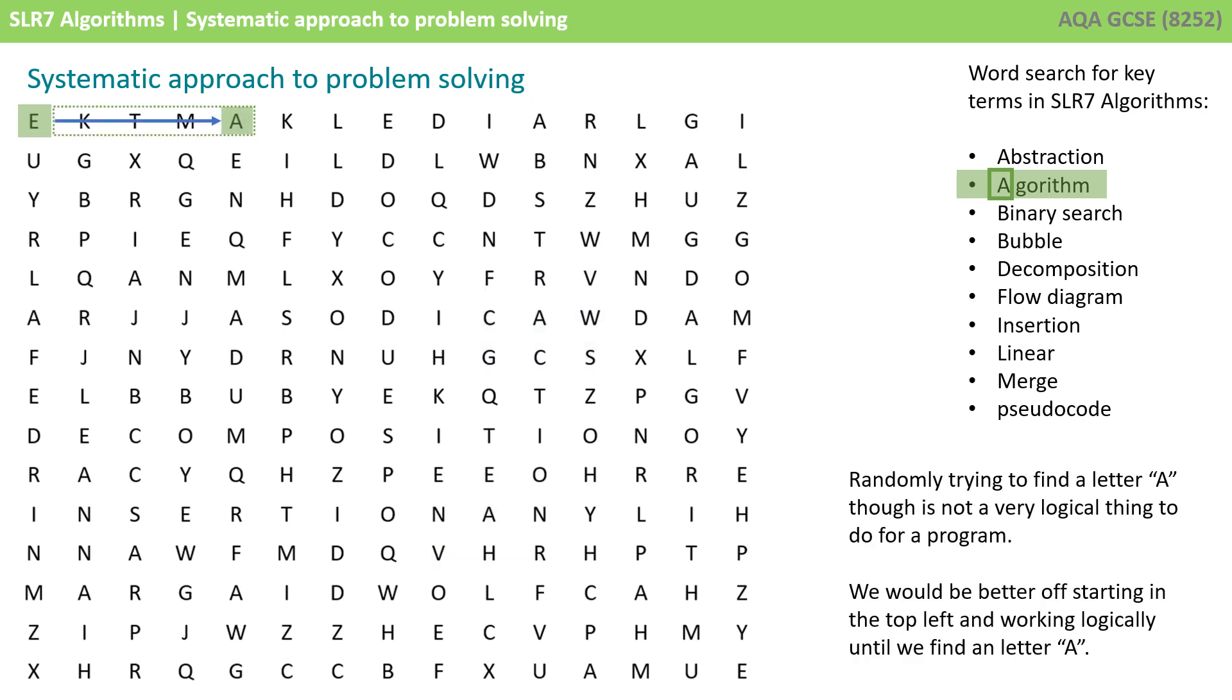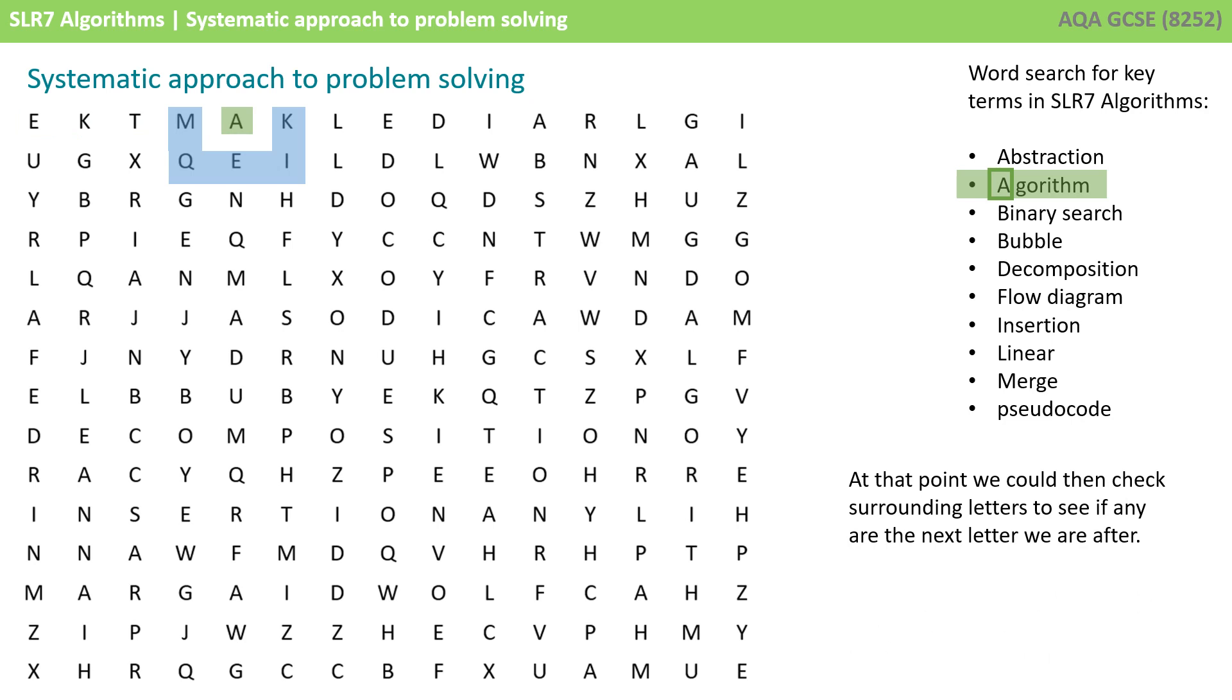We'd be far better off starting in the top left-hand corner and checking if that letter is the letter A, and if not, moving to the next letter, and the next, and the next, until we find an A. At this point, we can then check all the letters that are adjacent to it, to see if we can find the second letter in the word. And if not, we can move on to the next letter.